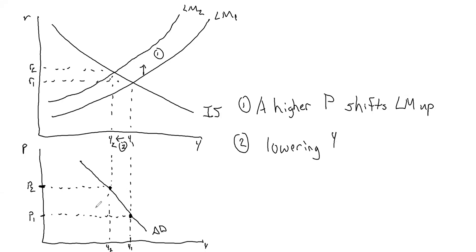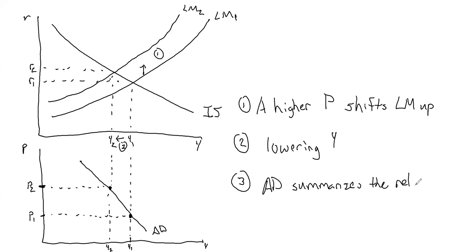We can summarize this relationship with our total aggregate demand curve, which shows the relationship between the total price level in an economy and total output in an economy. Aggregate demand summarizes the relationship between P and Y. We can see how different policies — monetary policy and fiscal policy — are going to impact the aggregate demand curve through changes in the ISLM model.